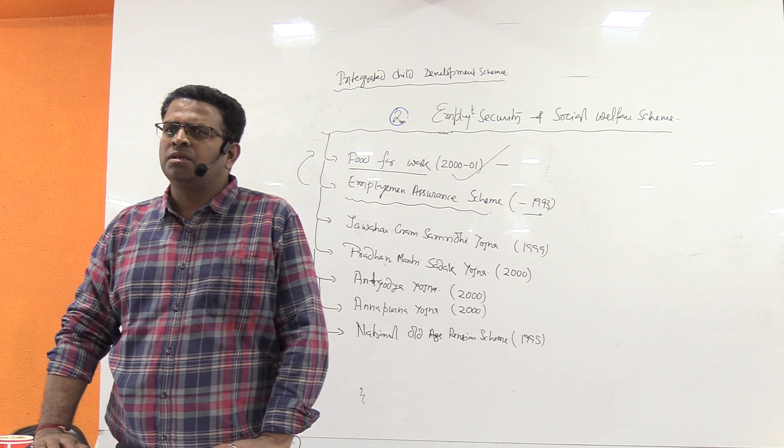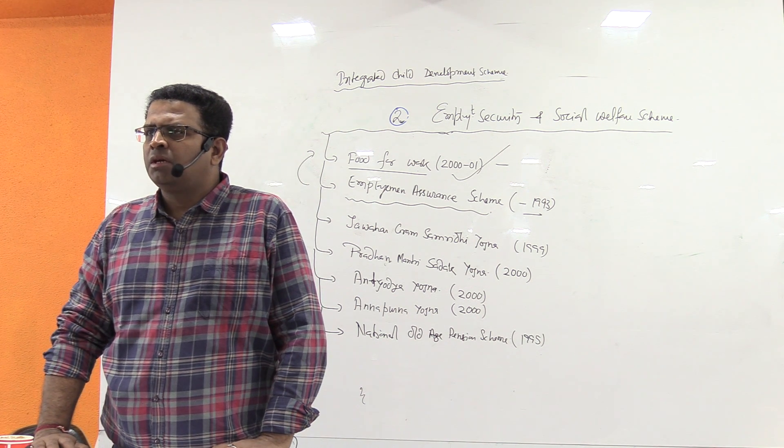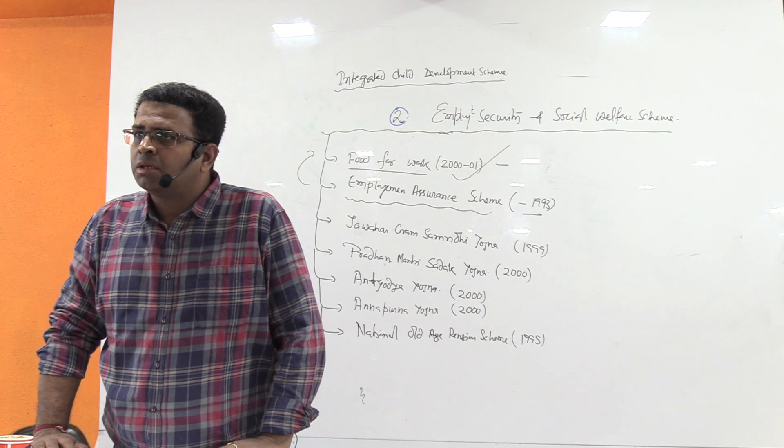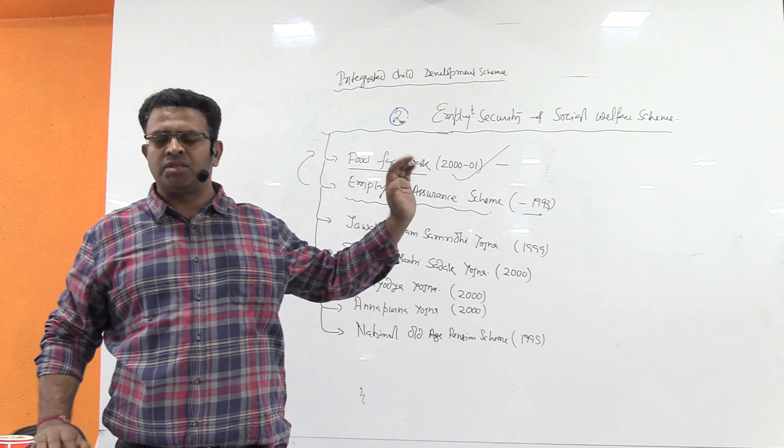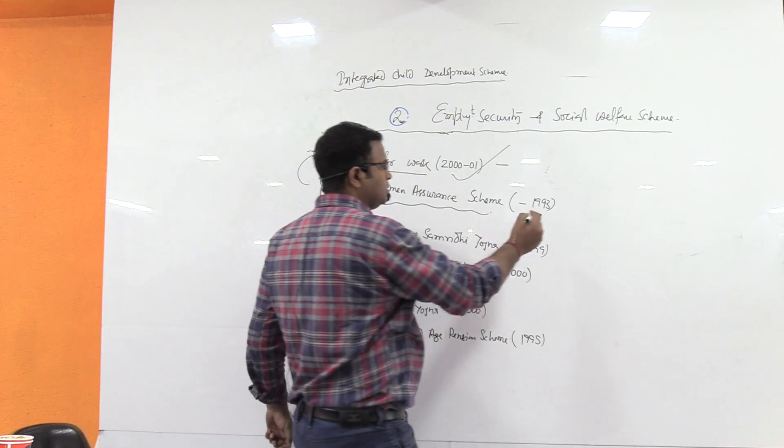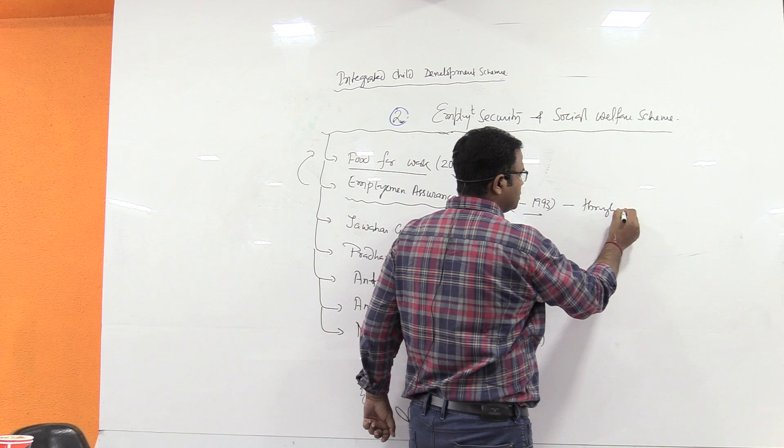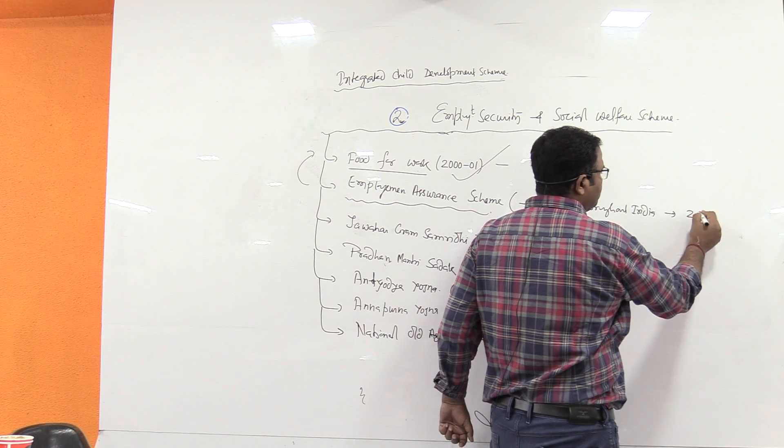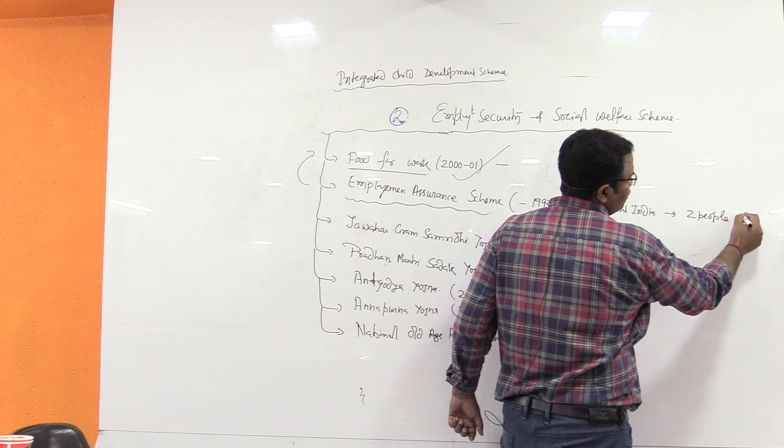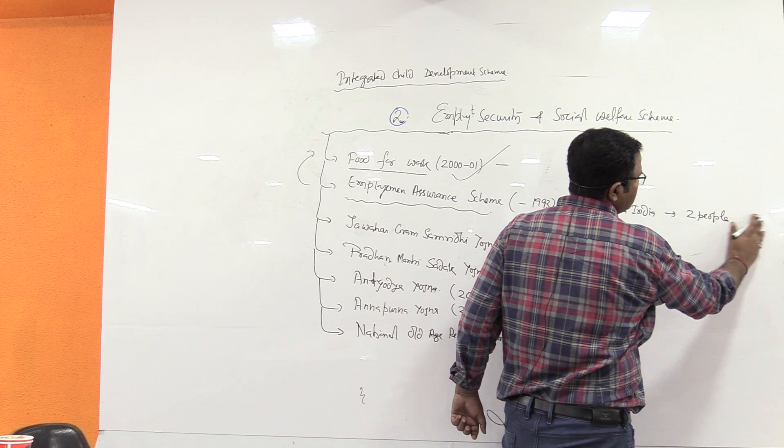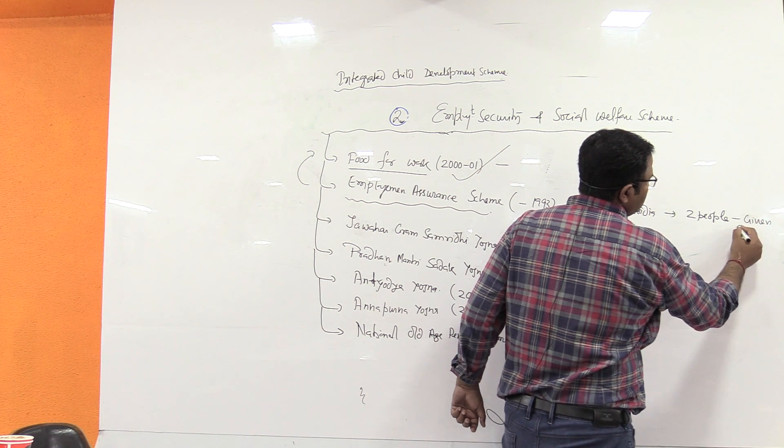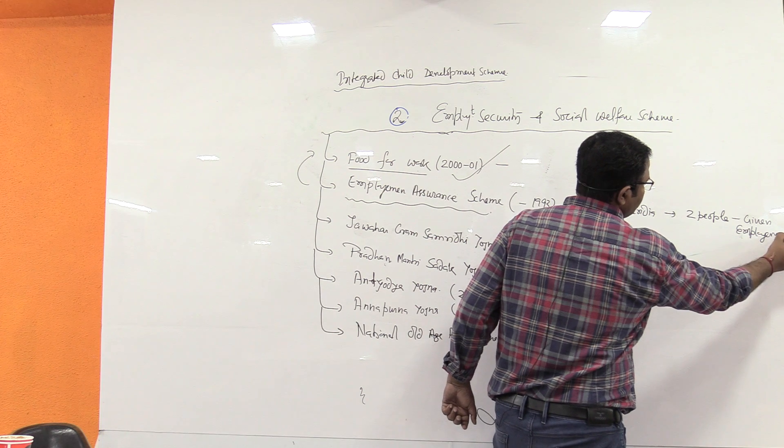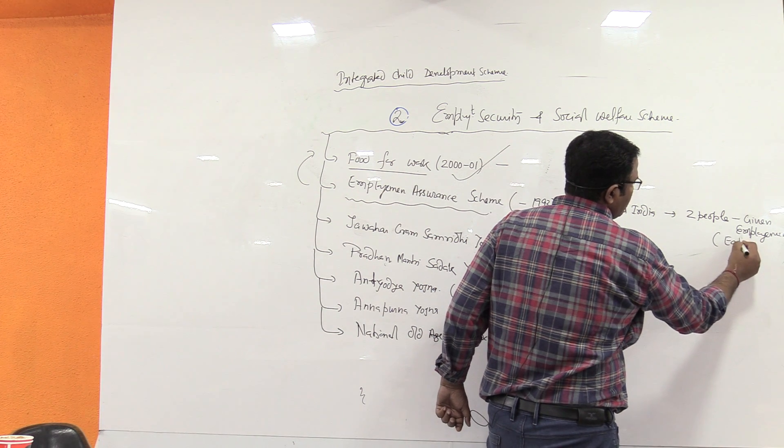Eight regions have been covered. Now at present it is throughout India. The employment insurance scheme is throughout India, and at least two people will be given employment from each family.